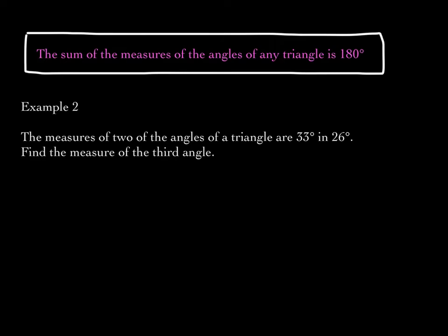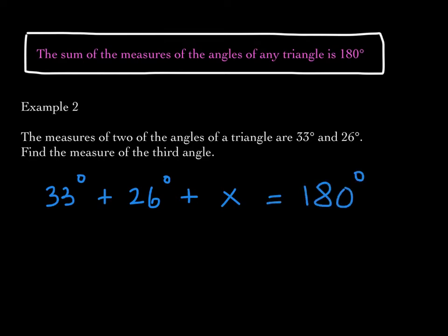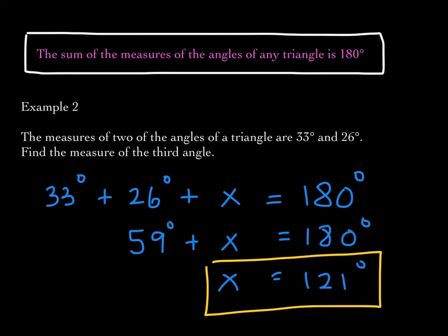Next example: The measures of two of the angles of a triangle are 33 degrees and 26 degrees. Find the measure of the third angle. We know the three angles must sum to 180 degrees, so 33 + 26 + x = 180. Pause the video and solve for x. The third angle must be 121 degrees.